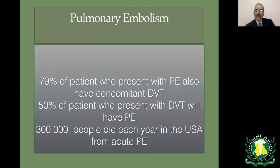79% of patients who present with pulmonary embolism will have concomitant DVT, and 50% of patients with deep venous thrombosis will also have pulmonary embolism. 300,000 people die in the United States each year from acute pulmonary embolism.